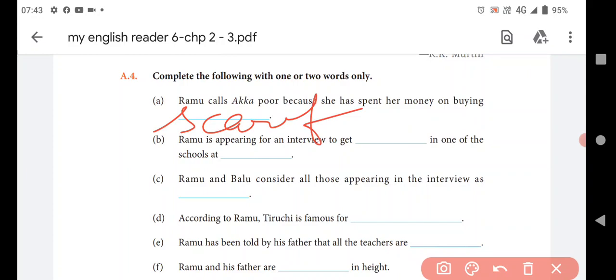Ramu is appearing for an interview to get admission in one of the schools at Tiruchi. Ramu and Baloo consider all those appearing in the interview as what? All candidates who consider lambs.